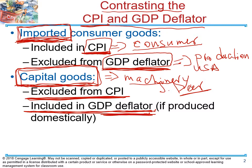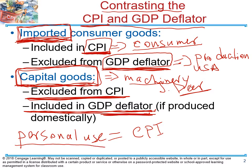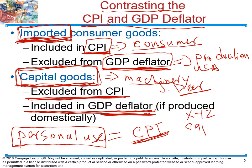If you as a consumer are purchasing a lawnmower for your personal use, then this is going to be part of the CPI — you're purchasing it to mow your own yard. But if company XYZ, a lawnmowing company, is purchasing that lawnmower, this is going to be a capital good and is not going to be part of the CPI.